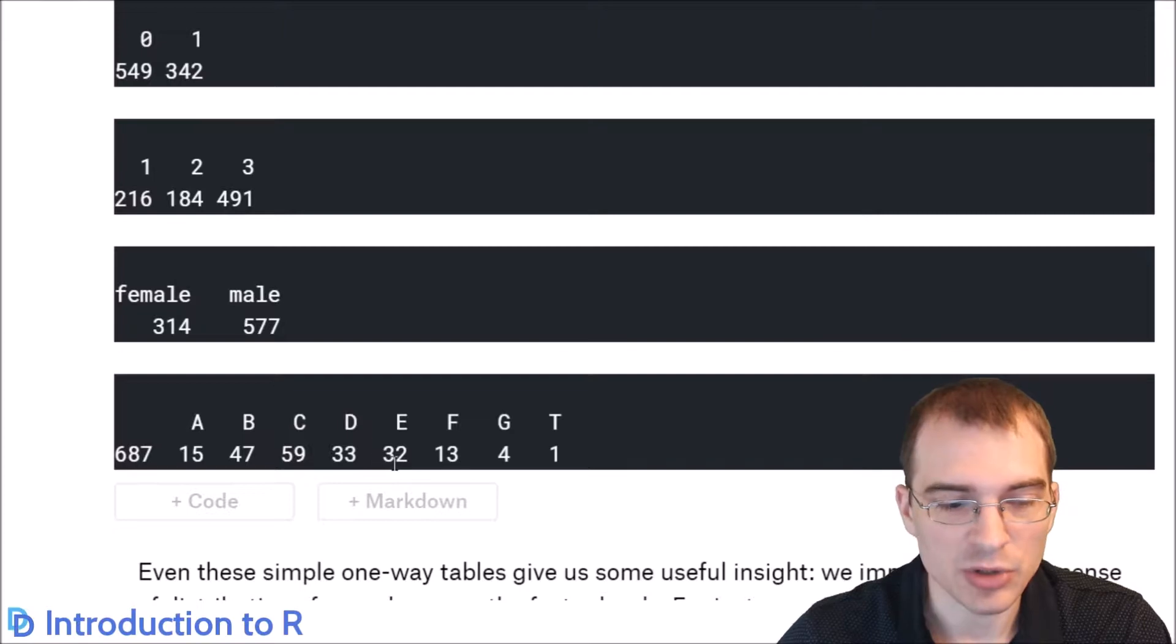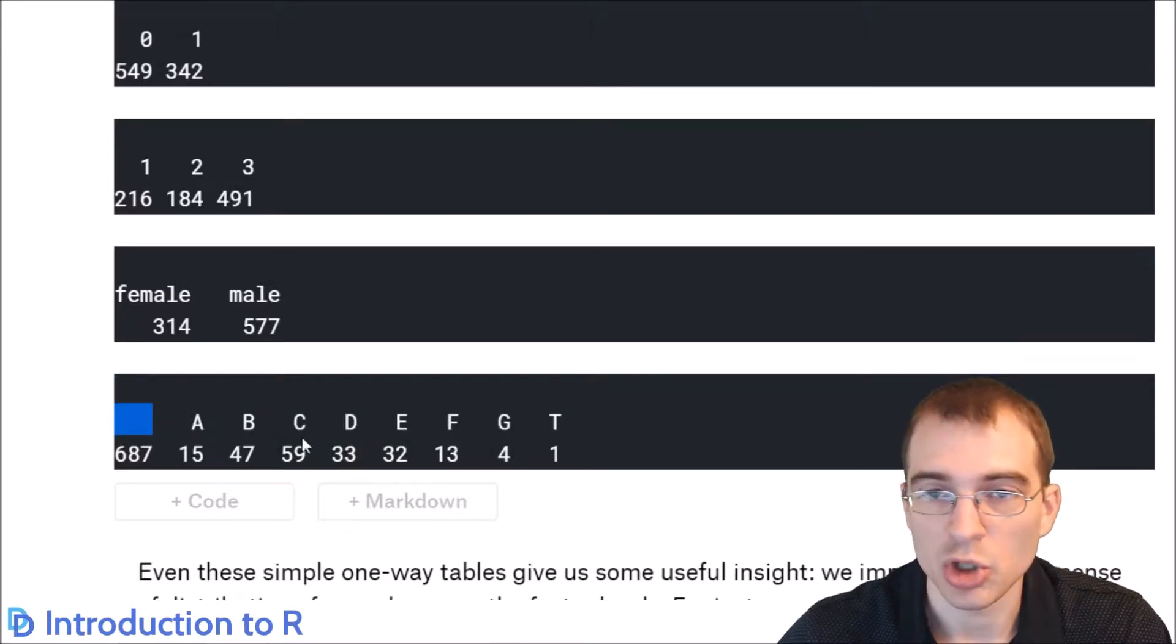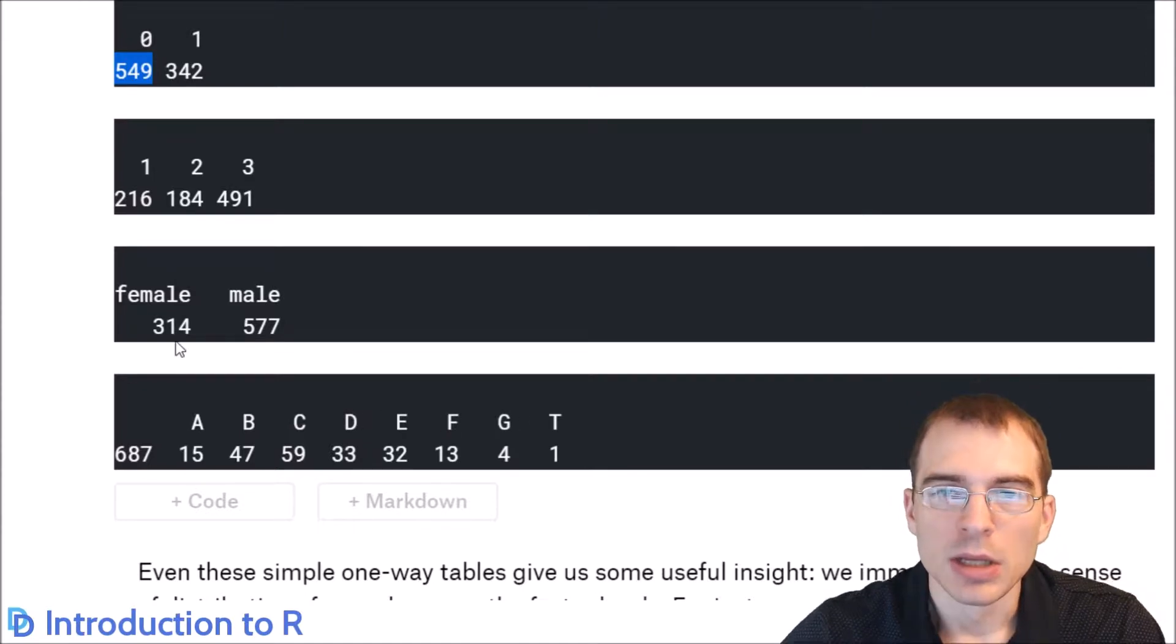And for the cabin variable, we can see something kind of interesting. The vast majority of the passengers recorded did not have a cabin that were recorded for them. There were some people where they knew what cabin they were in, but for most of the people, they didn't know what cabin they were in. So perhaps that's because a lot of people didn't make it, and they didn't live to tell the tale of what cabin they were in. As you can see, even simple one-way tables of a single variable like this can raise some interesting questions and give us some insight into the data.